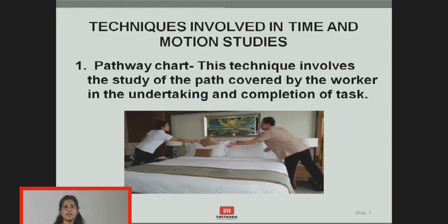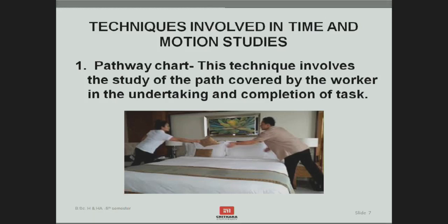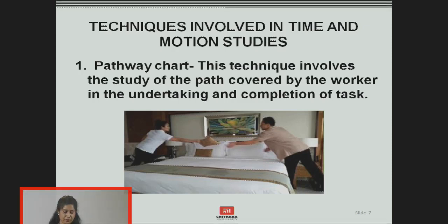These techniques involve the study of the path covered by workers in the undertaking and completion of a task. In this pathway chart, a floor plan of the work area is drawn to scale and fixed to a board on the wall. A long thread is pinned at the starting point on the plan and the line of motion is marked using this thread. Whenever the worker turns, that point is marked with a pin and the thread is wound around it. The length of thread gives an idea of the distance traveled in the completion of the task. The time is noted down, and this technique helps to pinpoint movement that can be reduced or eliminated, which is further discussed in the SOPs.